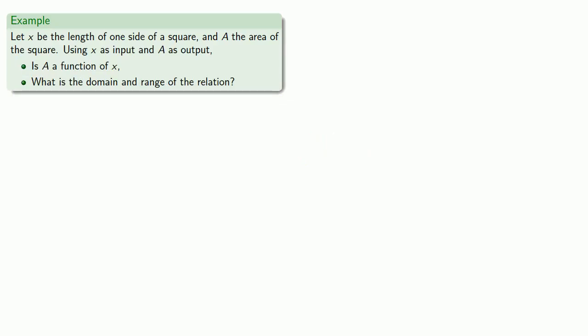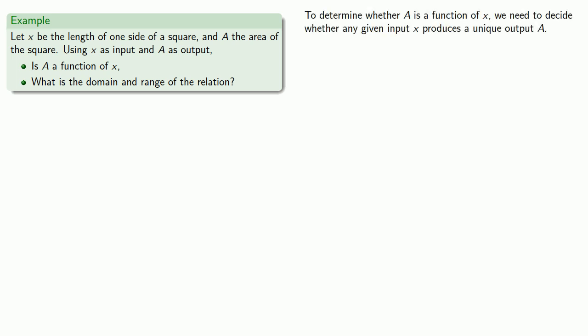For example, let x be the length of one side of a square and a the area of a square. Using x as input and a as output, is a a function of x, and what is the domain and range of the relation? To determine whether a is a function of x, we need to decide whether any given input x produces a unique output a. It will be convenient to express this relationship as an algebraic equation: a equals x squared.